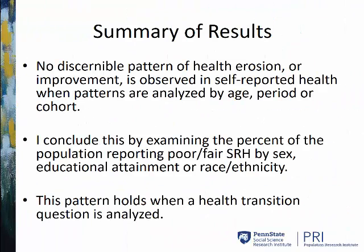To summarize my results, no discernible pattern of health erosion or health improvement is observed in self-reported health when patterns are analyzed by age, period, or cohort. I conclude this by examining the percent of the population reporting poor or fair self-reported health in an analysis that looks at sex differences, educational attainment differences, or racial ethnic differences. This pattern holds even when a health transition question is analyzed. A health transition question is collected by the NHIS by asking respondents to indicate whether their health was better, the same, or worse than a year ago at the moment of the interview.